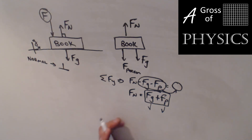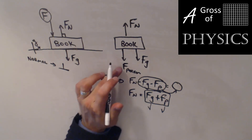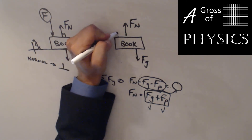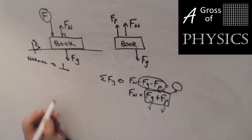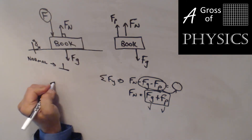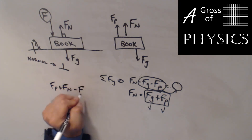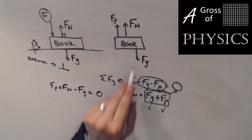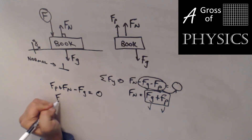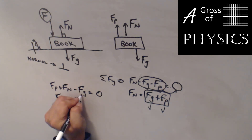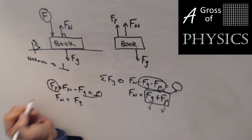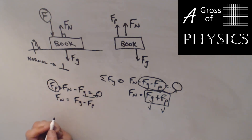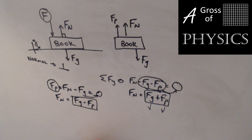We could also have a situation where we're trying to make the book lighter — maybe a rope is pulling up on the book. In that case: F_p plus F_N minus F_G equals zero, with two upward forces and one downward. Solving for F_N gives F_G minus F_p. So every time other forces are involved in the vertical direction, it changes the normal force — making it bigger or smaller — and the ground has to work harder or easier depending on the direction of that force.